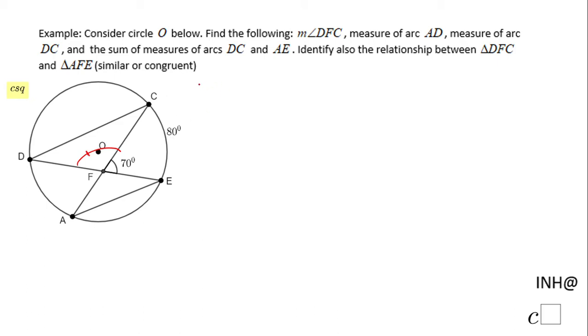If you notice, angle DFC and angle CFE form a line, so they are a linear pair and they are supplementary. The measure of angle CFE is 70 degrees, so we can find the measure of angle DFC by subtracting 70 from 180. The measure of angle DFC will be 110 degrees.